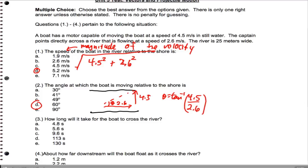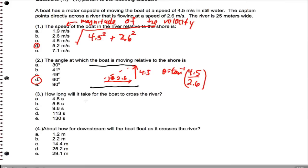We want to figure out how long it will take for the boat to cross the river. We only need the 4.5 meters per second speed to get that. So the time, we're going to use x equals v naught t plus x naught. That's going to be 25 equals 4.5 times t plus 0. When we solve for t, that ends up being 5.6 seconds.